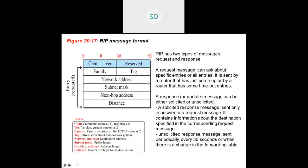A response or update message can be either solicited or unsolicited. A solicited response message is sent only in answer to a request message, containing information about the destination specified in the request. An unsolicited response message is sent periodically every 30 seconds, or whenever there is a change in the forwarding table.